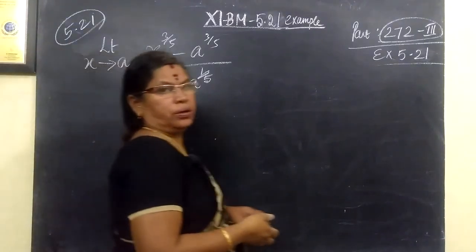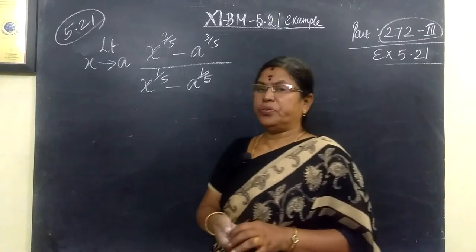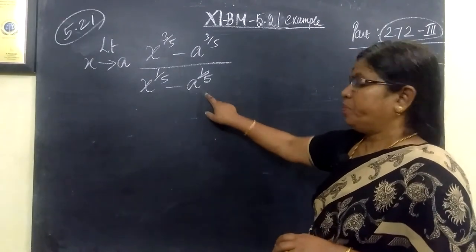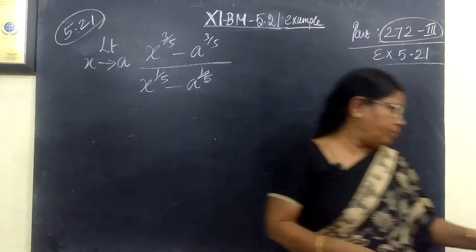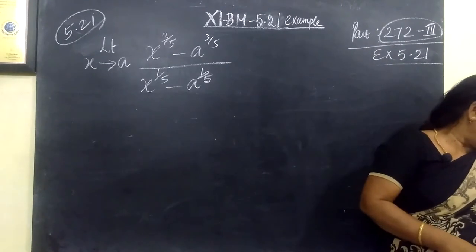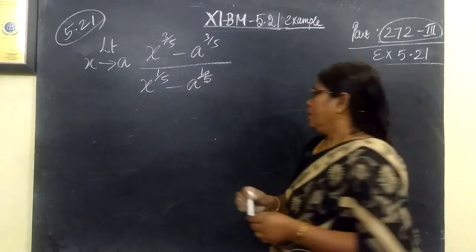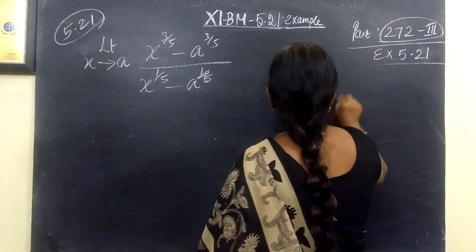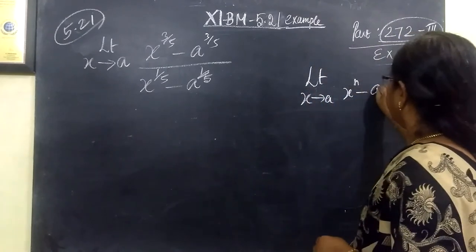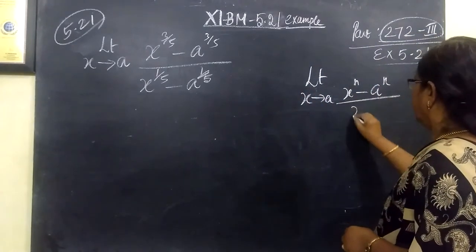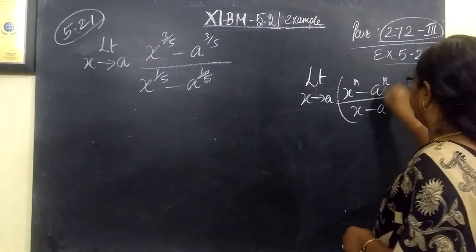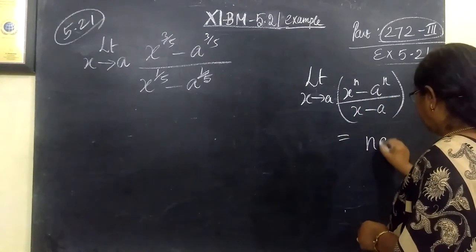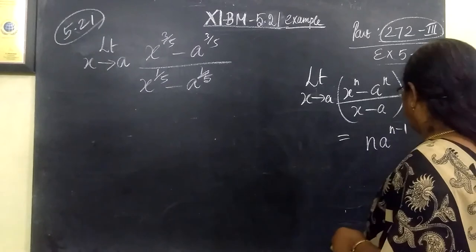Example 5.21: the limit as x tends to a of (x^(3/5) - a^(3/5)) / (x^(1/5) - a^(1/5)). In this question, we are using the formula: limit as x tends to a of (x^n - a^n) / (x - a) = n · a^(n-1).